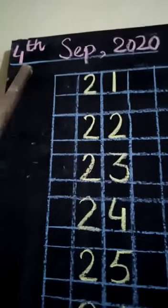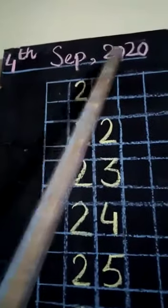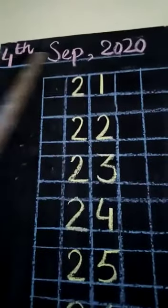Look at the board. Today the date is 4th September 2020. 4th September 2020. And today the day is Friday. Jumma. Today the day is Friday.